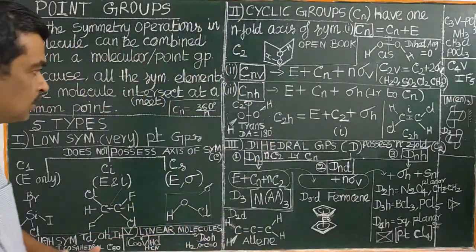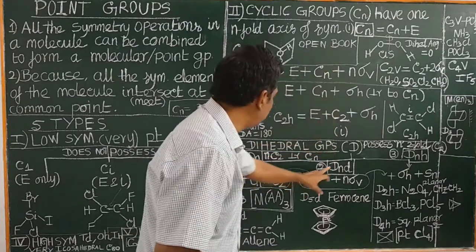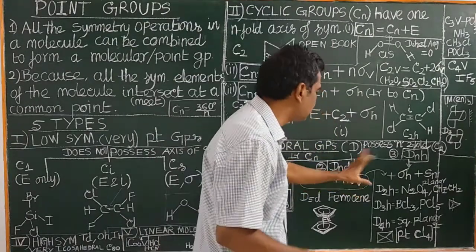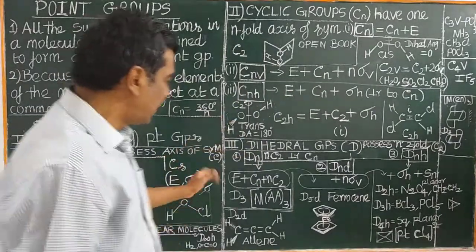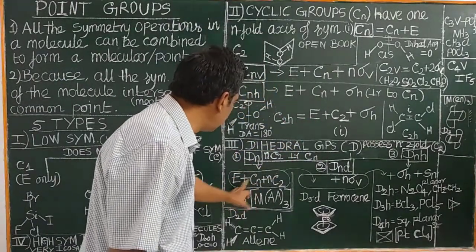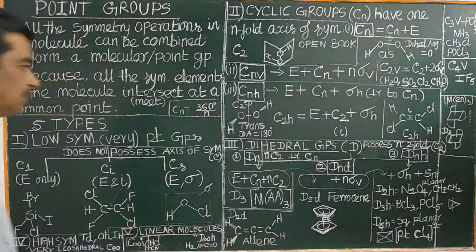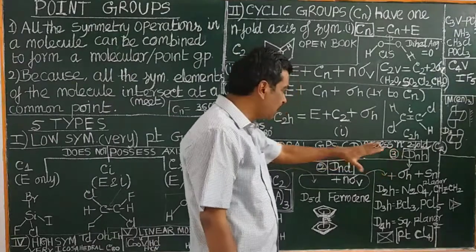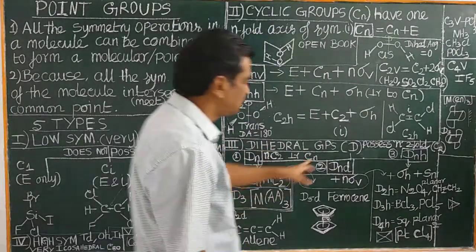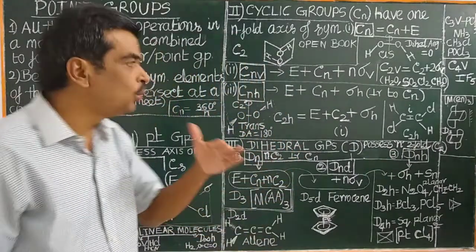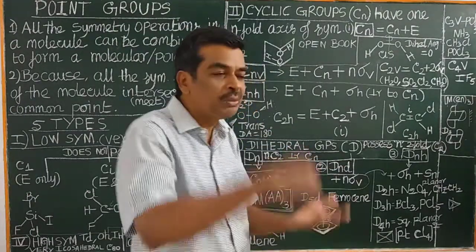Now let us see dihedral point groups. There are three types: Dn, DnD, and DnH. Dihedral point groups, in addition to E and Cn, also possess N two-fold axes perpendicular to the principal Cn axis. For example, D3 possesses E, C3, and 3C2.